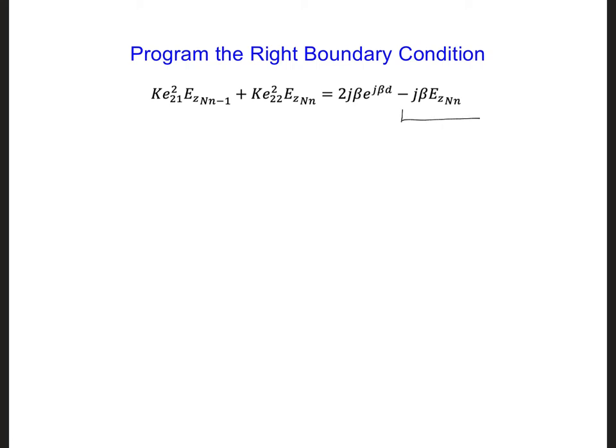You might have noticed that the second term here includes the unknown, ez, at node, the last node, nn.